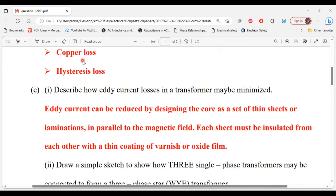For part C, part one of C, it says describe how eddy current losses in a transformer may be minimized. All right, so eddy current losses can be minimized by using thin sheets or laminations, and they should be in parallel with the magnetic field.